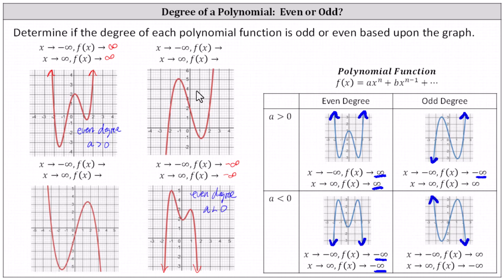Now let's consider the graph of this polynomial here. For the left-hand behavior, as x approaches negative infinity, f of x decreases without bound and approaches negative infinity. And for the right-hand behavior, as x approaches positive infinity, f of x increases without bound and approaches positive infinity. This behavior indicates the polynomial has an odd degree, and the leading coefficient a is positive.